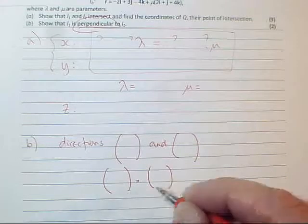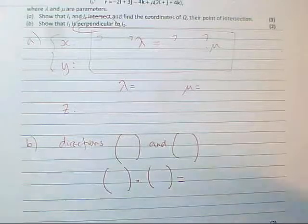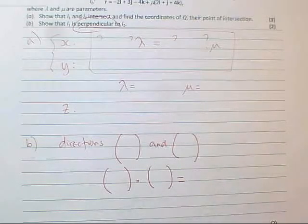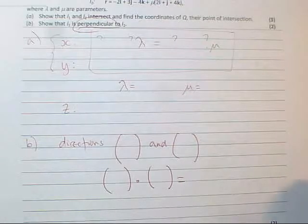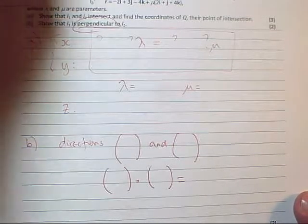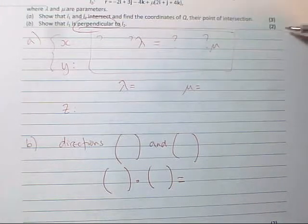The scalar product of these two vectors. So you're going to be scalar producting them. You're going to be getting an answer, and you're going to be interpreting that answer. You don't need for perpendicularity to use the full-blown cos theta recipe. I suppose you could if you were desperate, but you'd be spending more time and ink than it's worth for two marks.